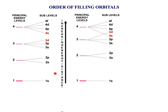Electrons fill up the shells and subshells in order — first shell 1, then shell 2. But something strange happens in shell 3 because there's an overlap. The 3S fills up, then the 3P fills up, but then the 4S actually fills up before the 3D subshell.